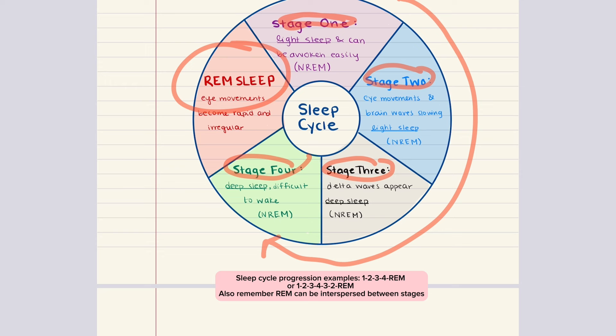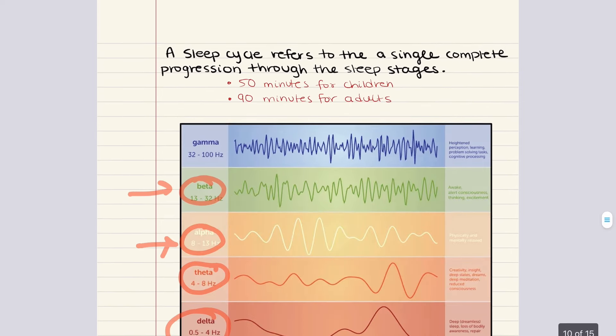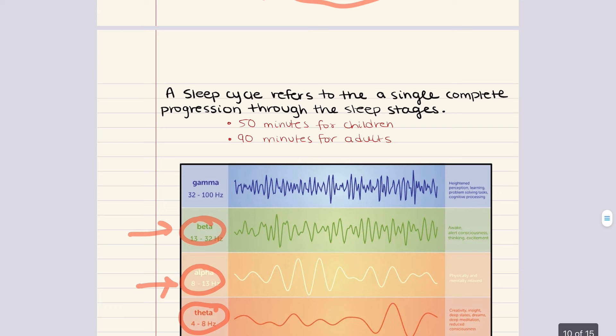Sleep happens in cycles. A sleep cycle is a single complete progression through the sleep stages. Over the lifespan, the length of the cycle increases from approximately 50 minutes in children to about 90 minutes in adults. Disruption of slow-wave sleep and REM sleep can have negative consequences — resulting in diminished memory, diminished cognitive performance, and impaired mood, problem-solving, and motor skills.